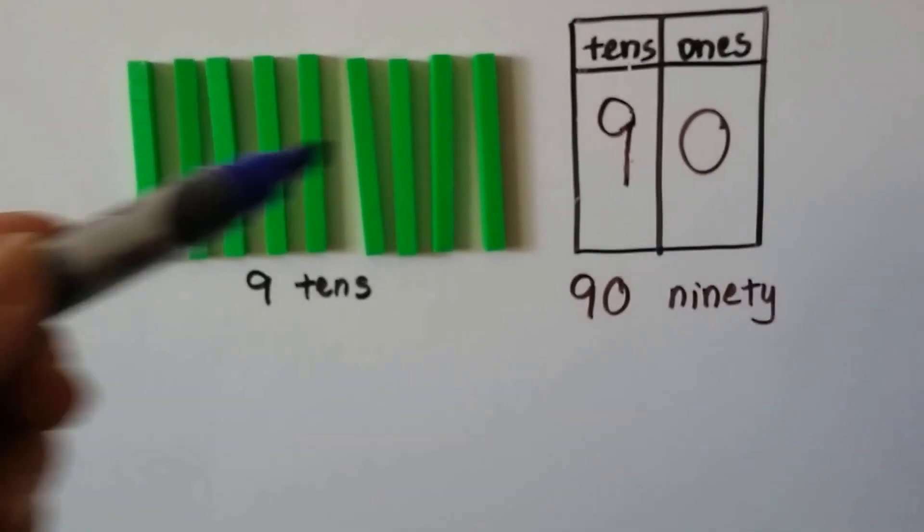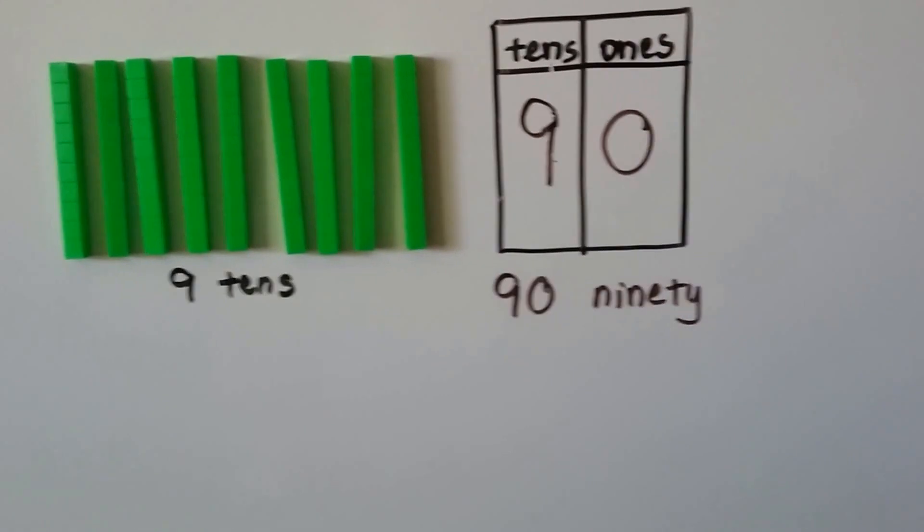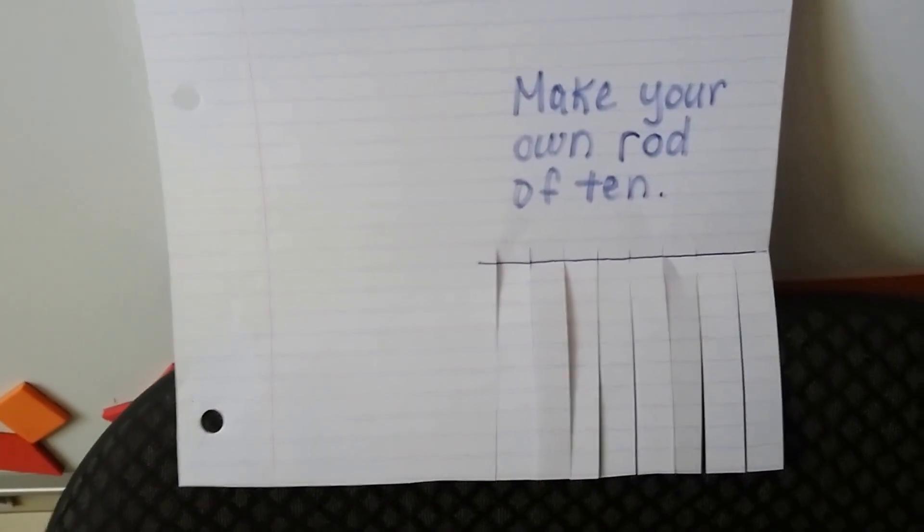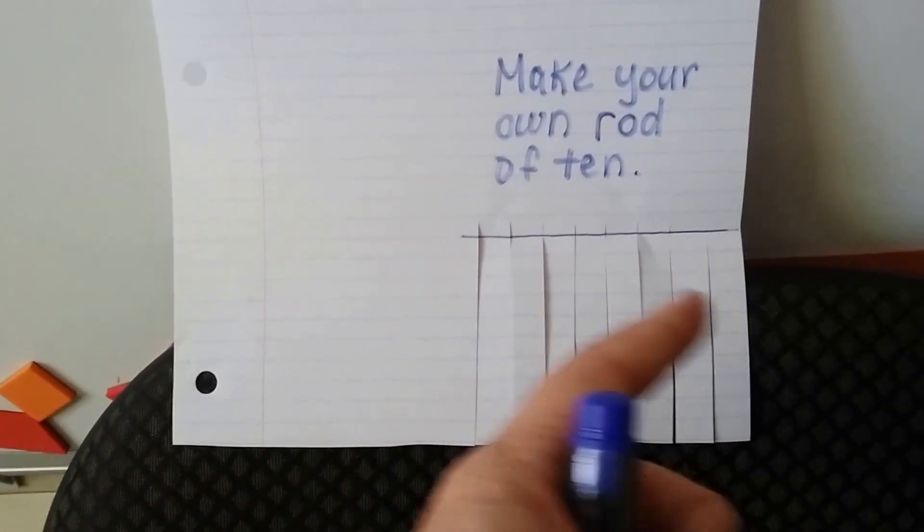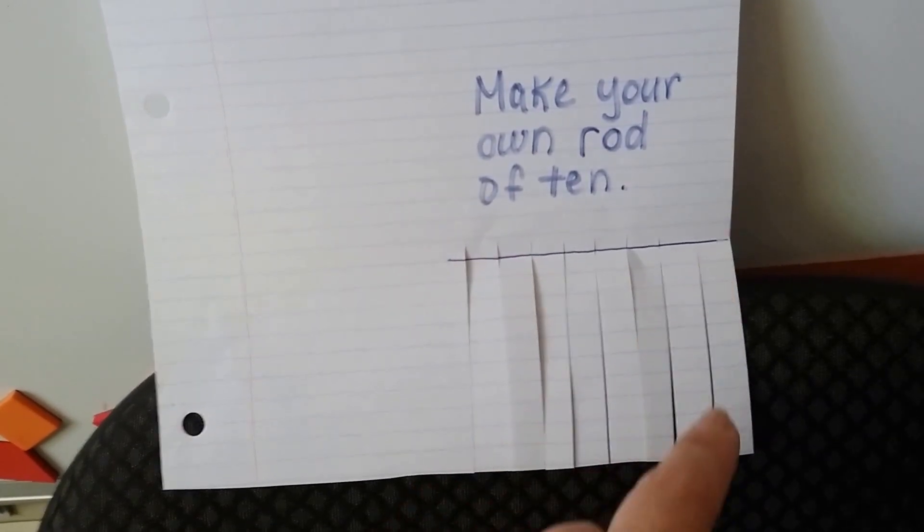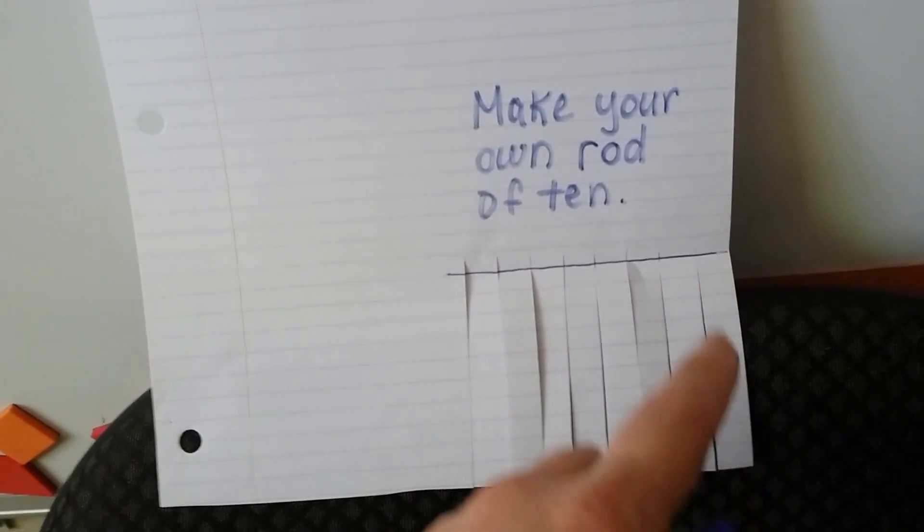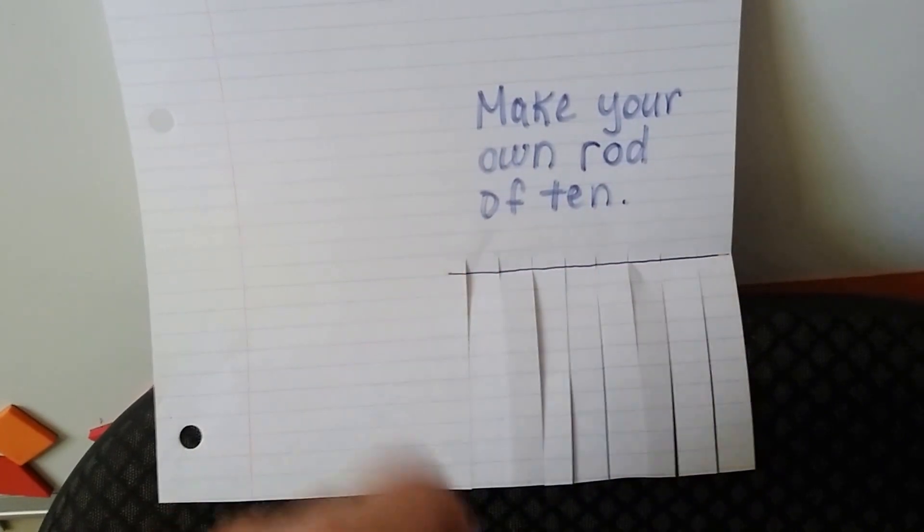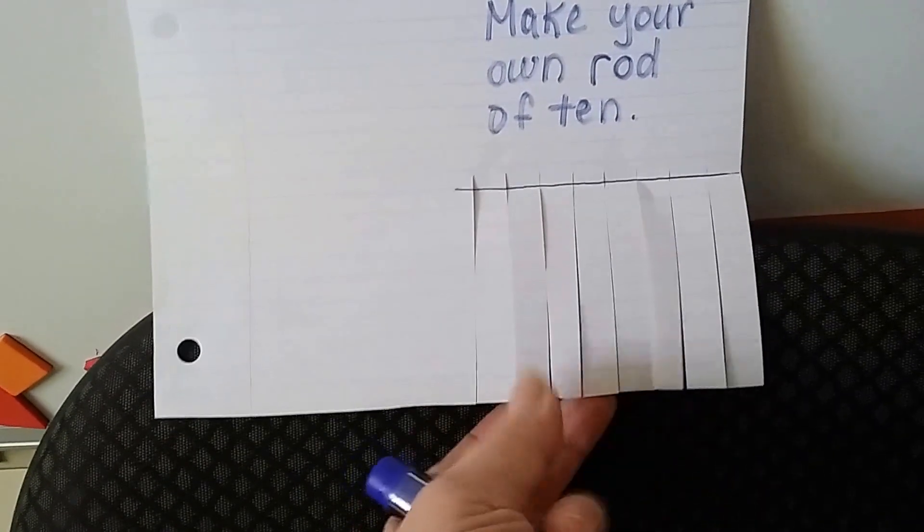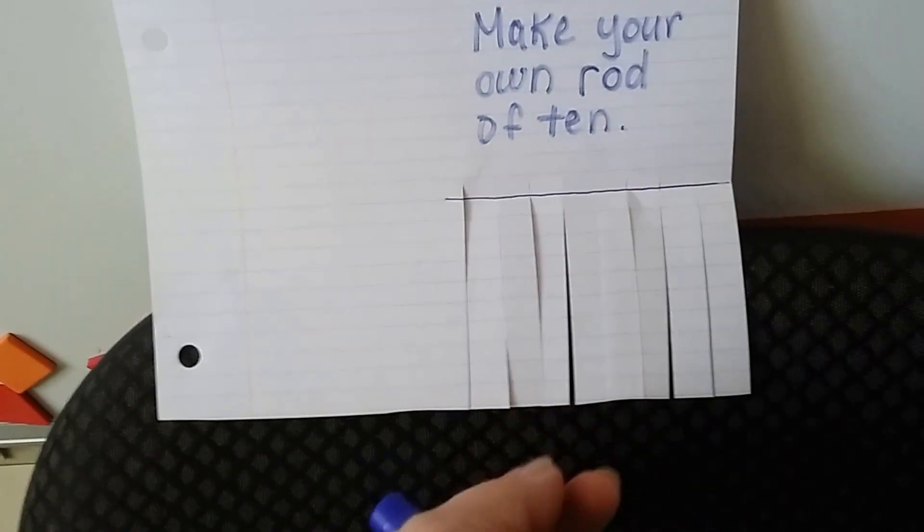Now if you don't have rods like this to help you count by tens, you can make your own. You can make your own rod of 10. You can take a piece of paper with lines on it and you can count 10 boxes, 10 lines, and draw a line on the 11th one. You can take scissors and cut them and make your own rods of 10.